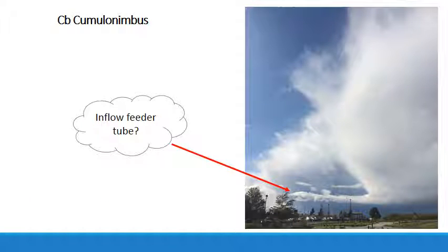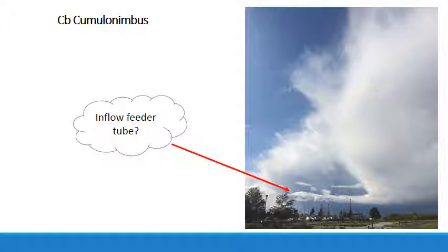This cumulonimbus cloud is associated with a cold front that blew through Fort Steilacoom, Washington last May. You can see its top looks quite wispy and there are other wispy cumulonimbus clouds in a long chain stretching off to the north. The linear cloud at the base of this storm appears to be an inflow feeder tube, bringing warm moist air like a vacuum cleaner hose into the storm and providing it with the energy it needs to grow.